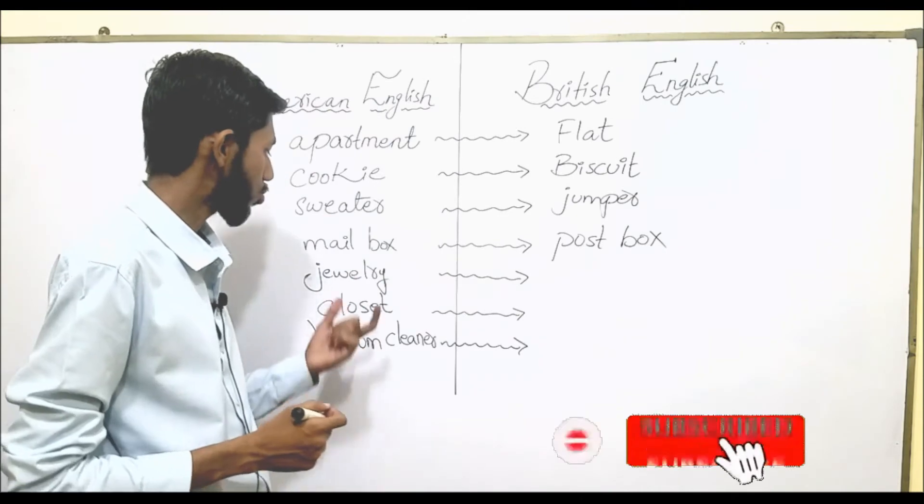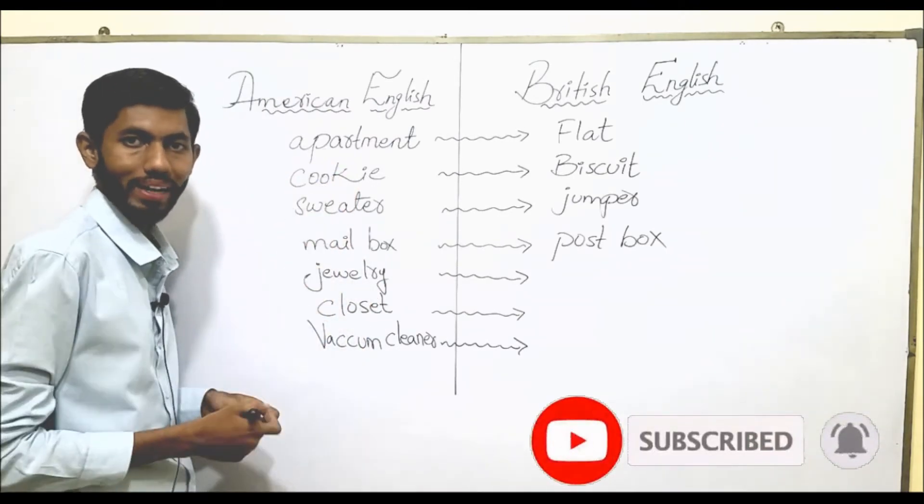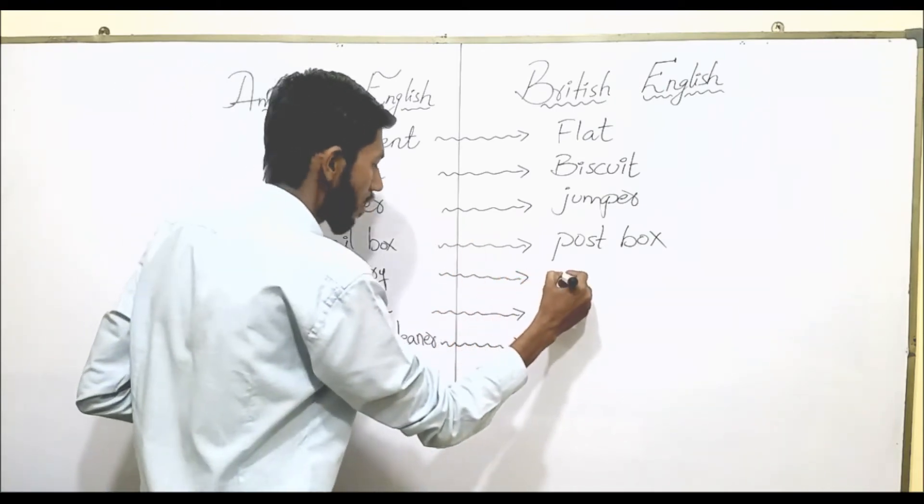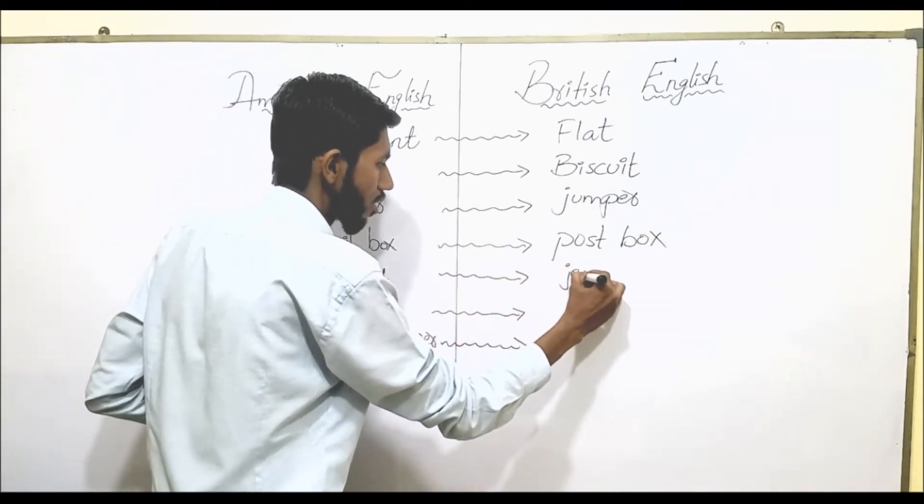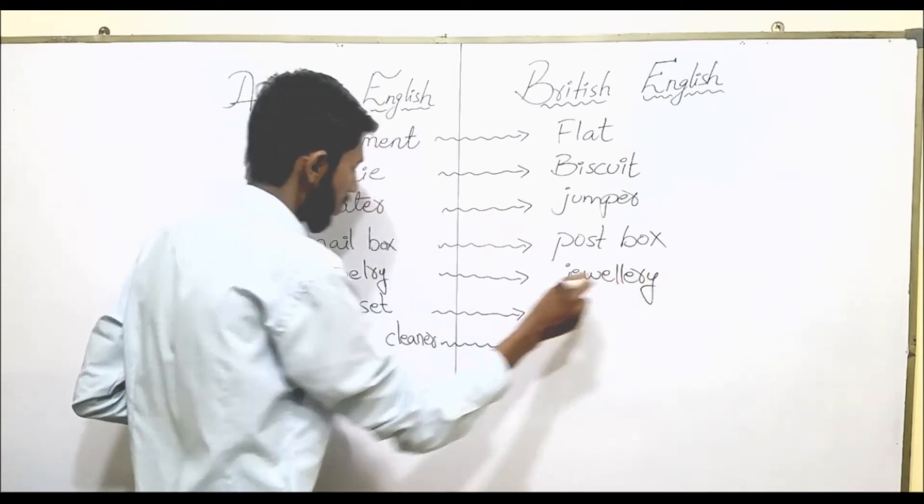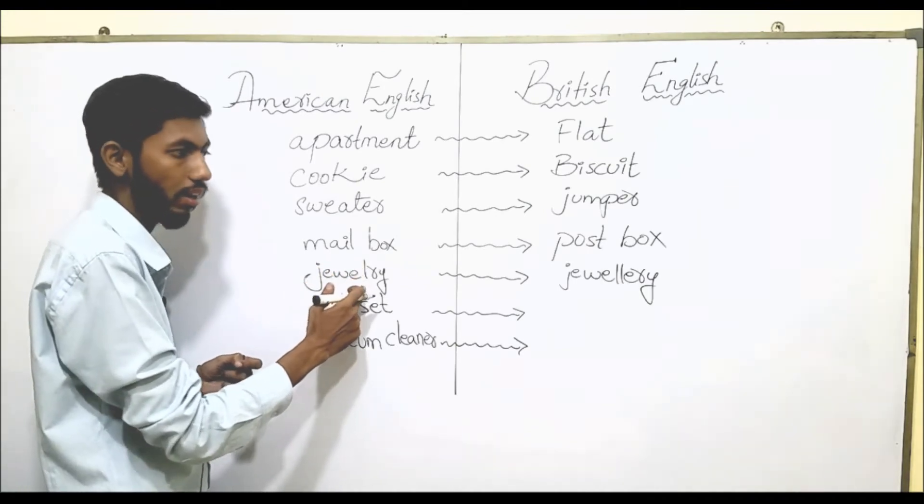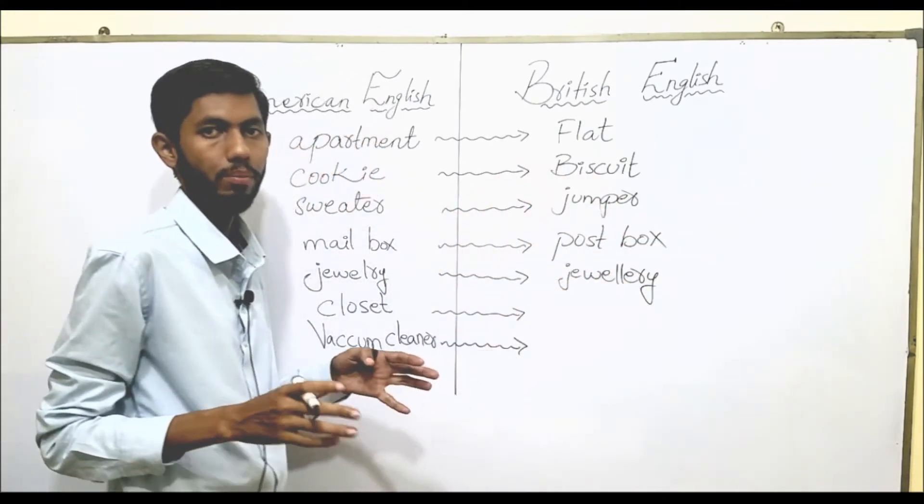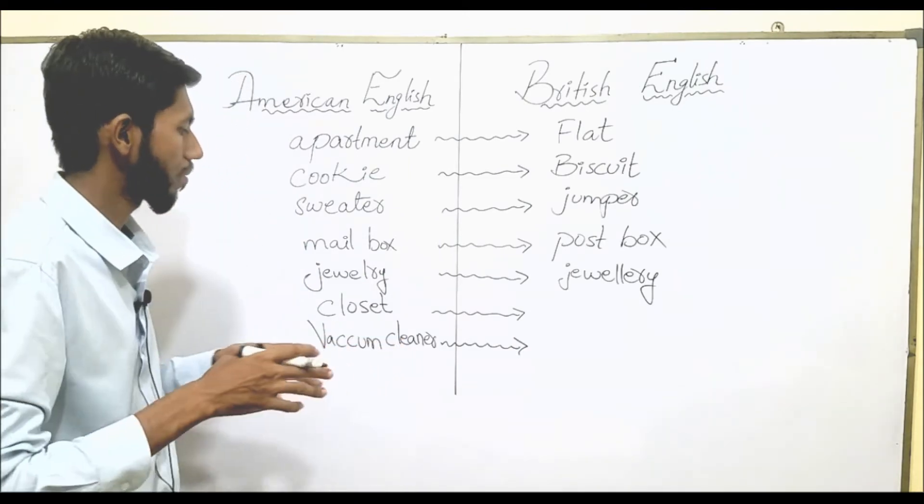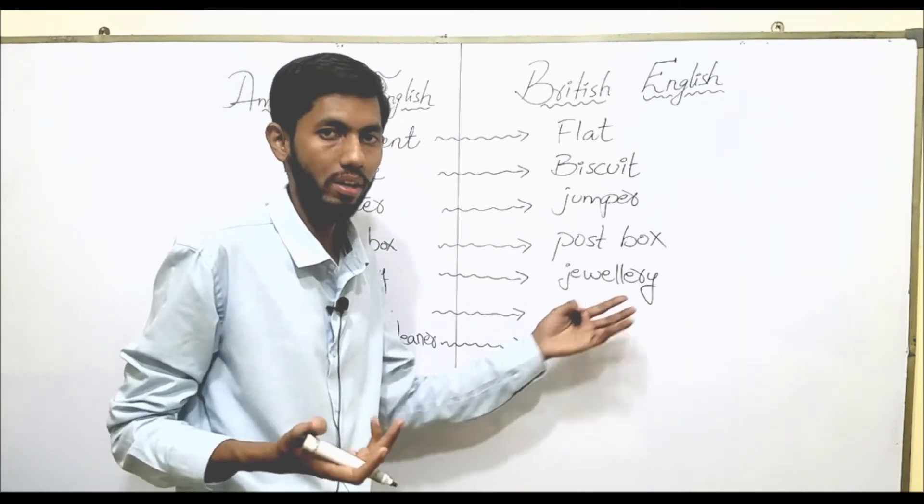Next word is jewelry. Jewelry is a word from American English, and in British English the word remains the same but the spelling changes slightly. You need to remember that when we write jewelry in American English, we use a single L, but in British English we use double L, and both are acceptable, both are correct. You will find it written with single L and double L.